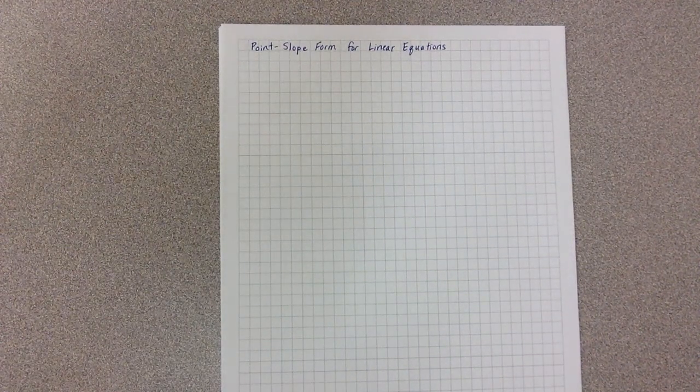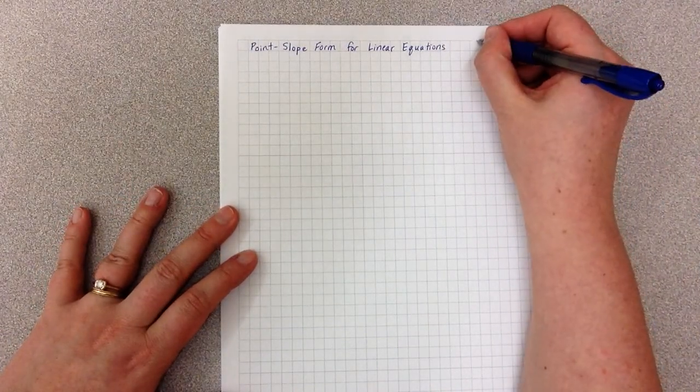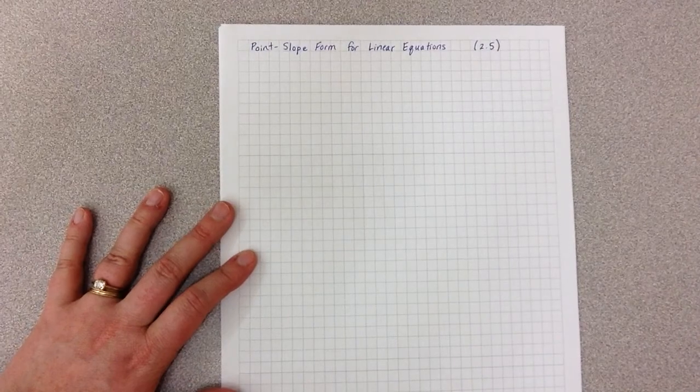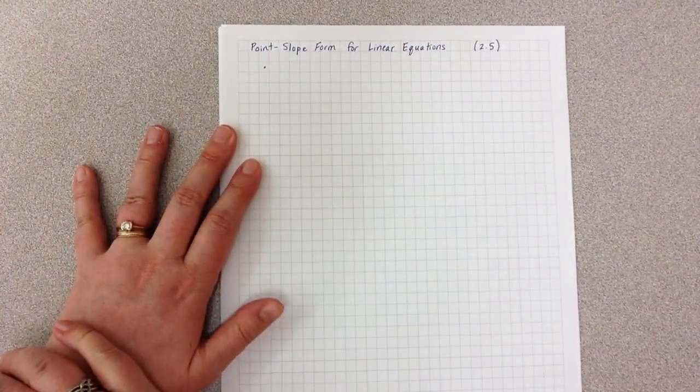The topic in these notes is what's called the point-slope form for linear equations. And this is the topic that you explored in depth in section 2.5. So the first thing we want to do is define it.